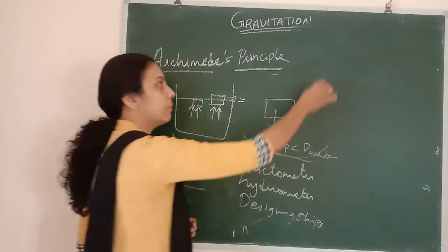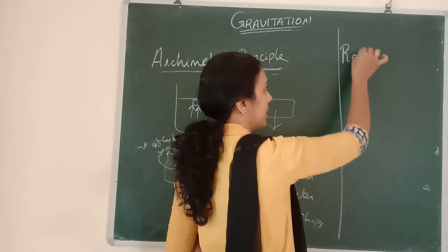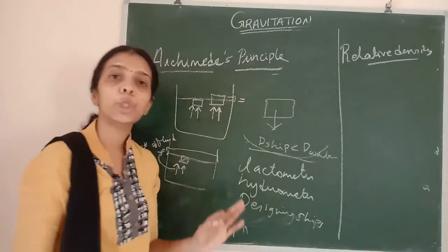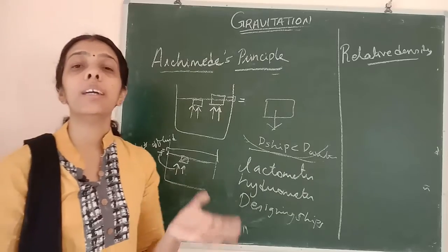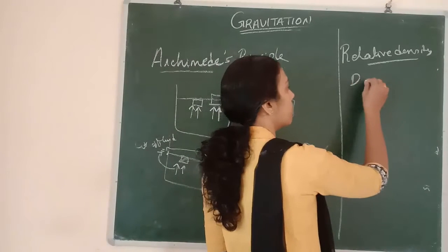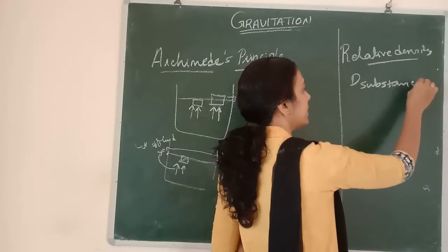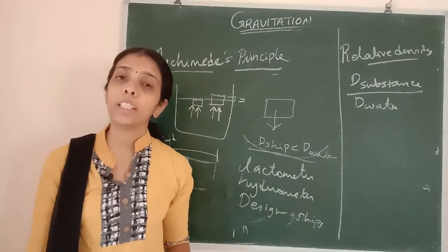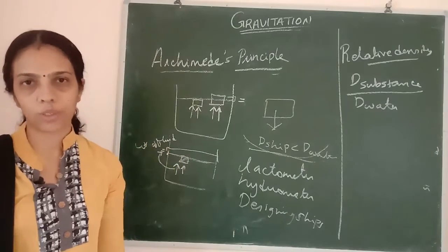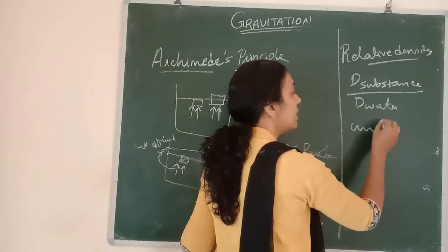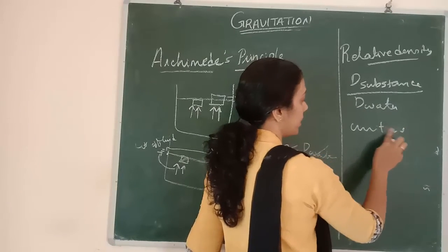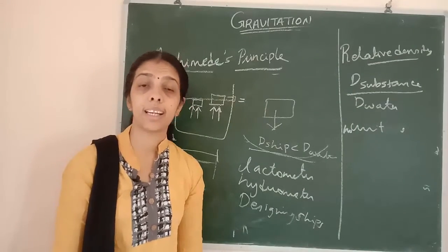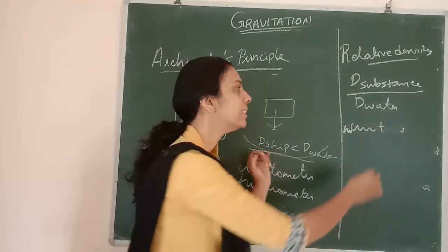Now the last small portion: relative density. Relative density is the ratio of the density of a substance to the density of water — density of substance divided by density of water. It has no unit, because it is a ratio of two densities.